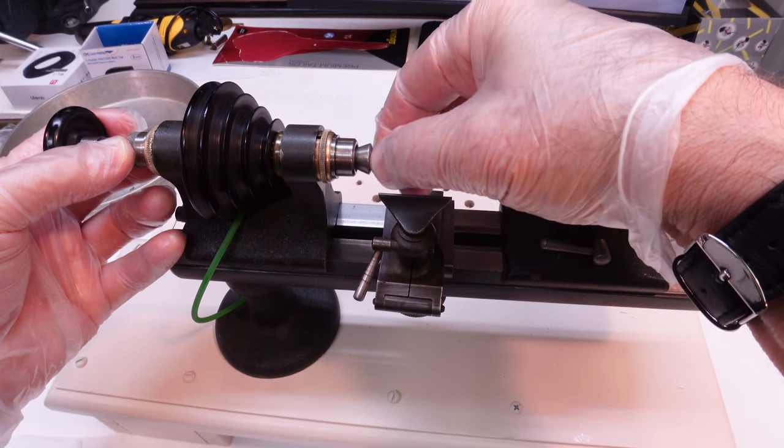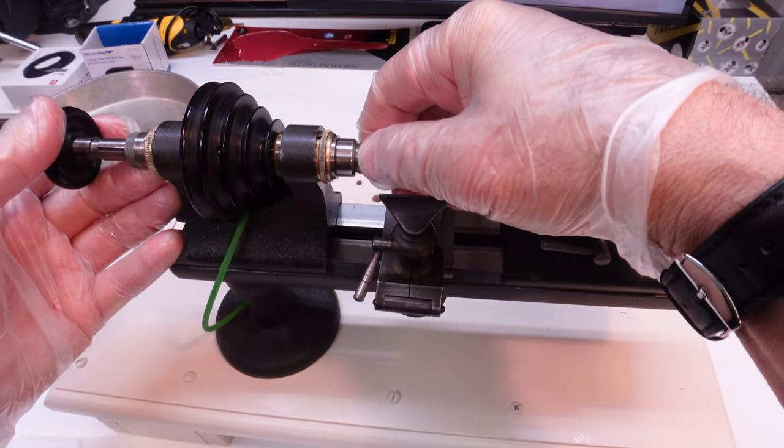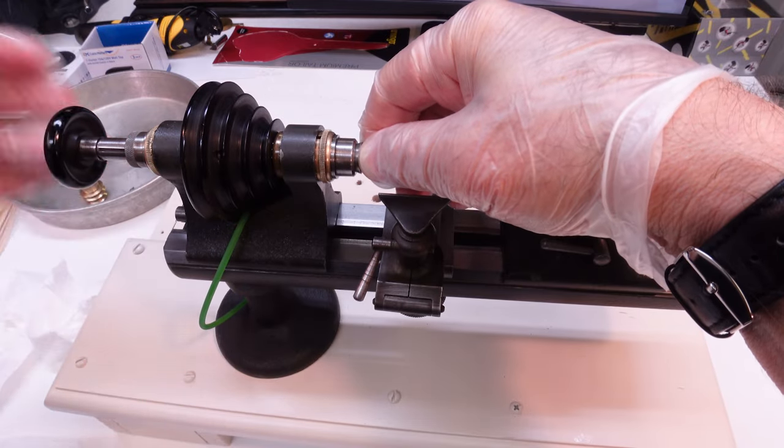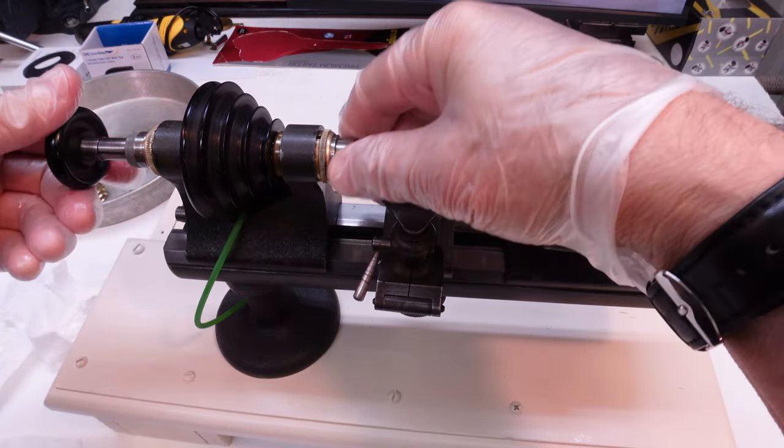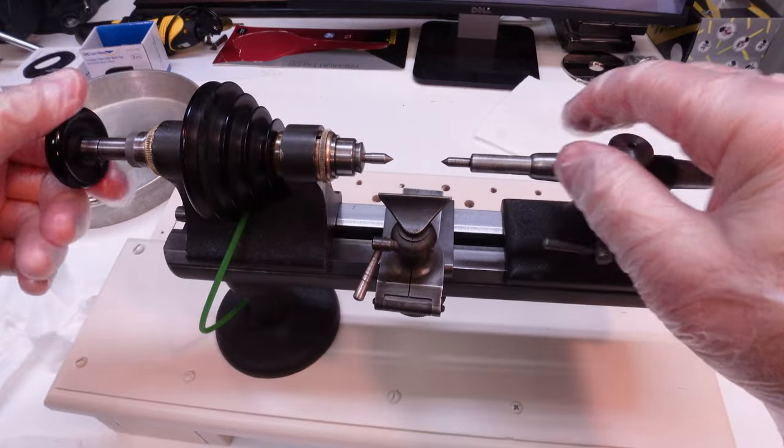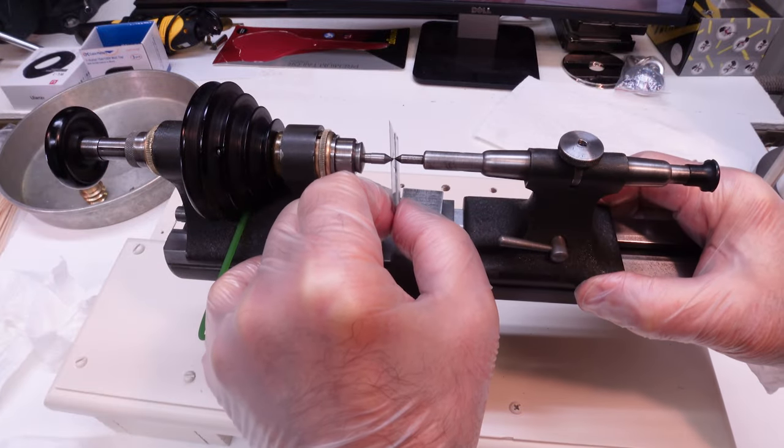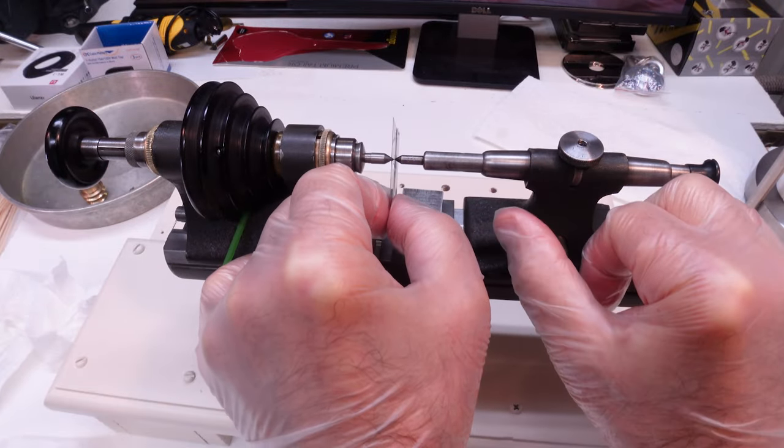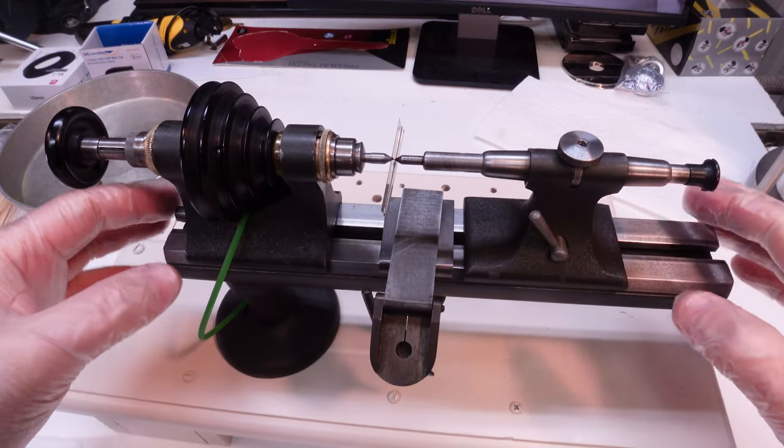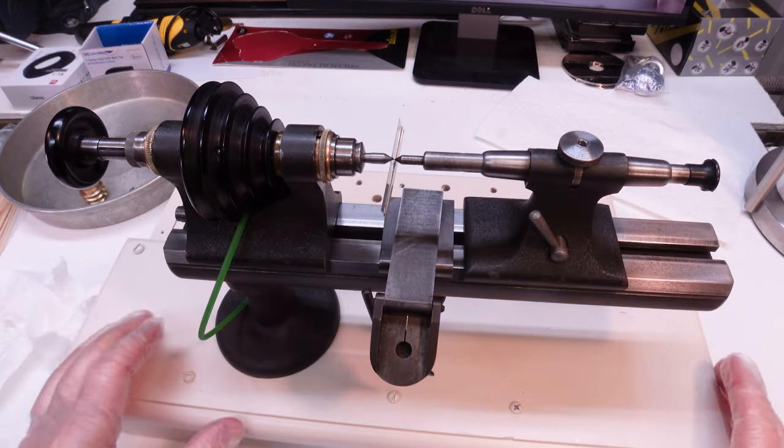With the center chucked up in the headstock, I will try the razor blade trick to see if it's aligned with the tailstock. With the two points pressed together, a razor blade should remain straight up and down and not deflect in any particular direction. While not perfect, I think we're off to a very good start with the new lathe.